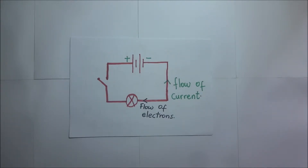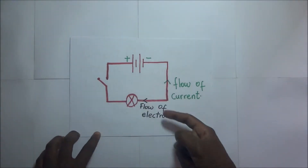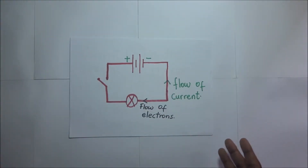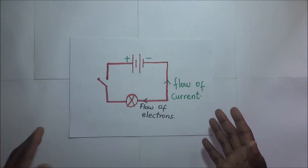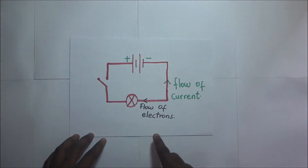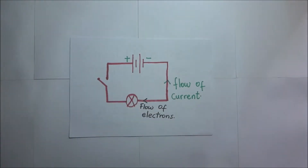About 150 years later, in around 1897, another physicist, JJ Thomson, actually discovered that electrons do exist, and that these electrons flow towards the positive direction. JJ Thomson concluded that electrons flow from the negative to the positive, and that is supposed to be the correct direction of flow of electricity.